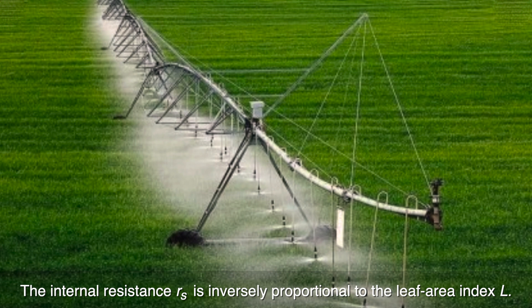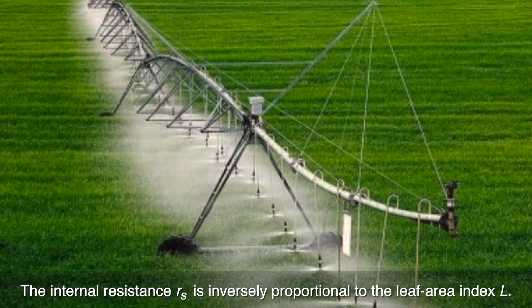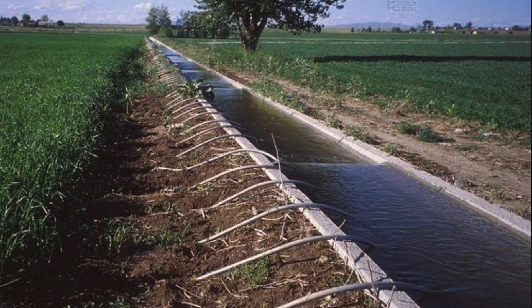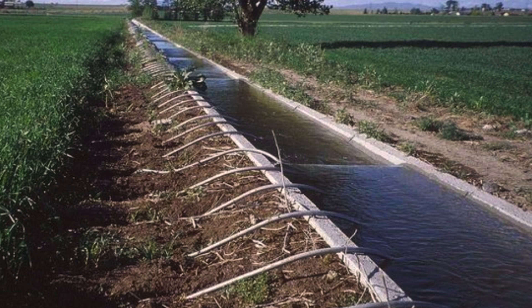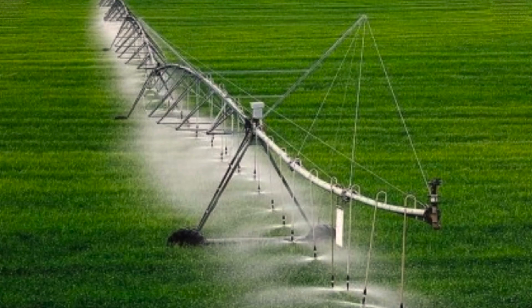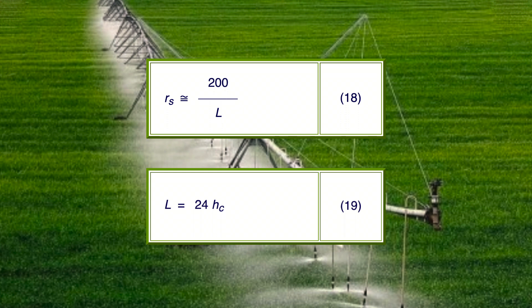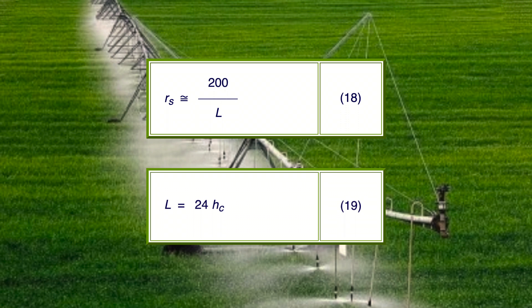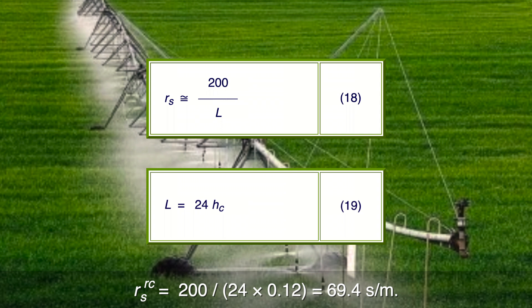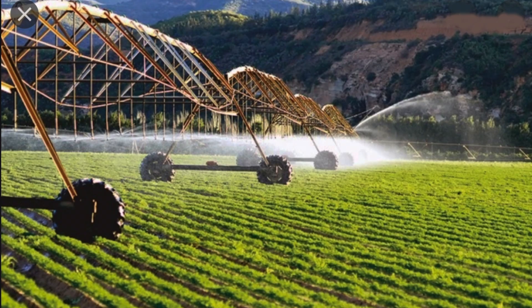The internal or stomatal or surface resistance r sub S is inversely proportional to the leaf area index L. An empirical relation for surface resistance r sub S is given. The leaf area index L is empirically related to crop height h sub C. The leaf area index for clipped grass is given. From equations 18 and 19, the surface resistance of the reference crop (clipped grass, 0.12 meter high) is r sub S equal to r sub C equal 200 divided by 2, giving the leaf area index.